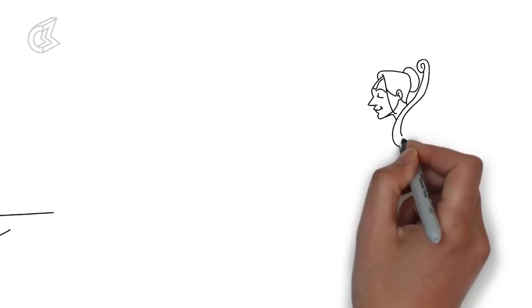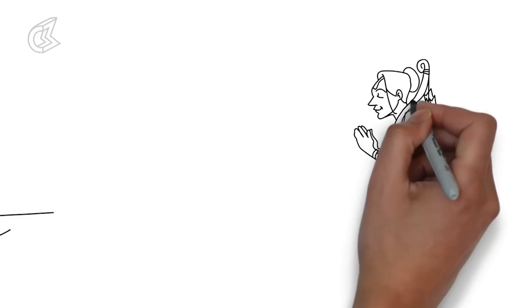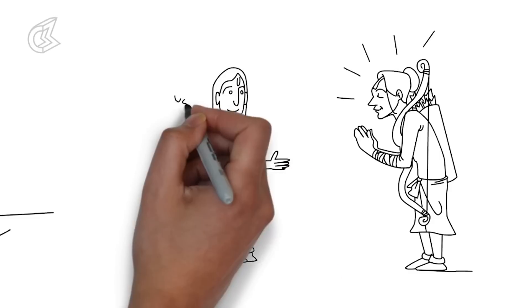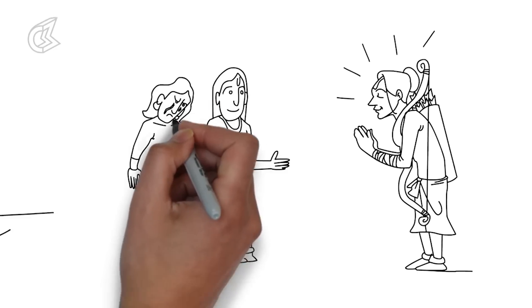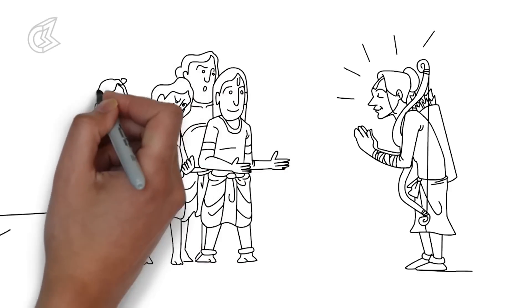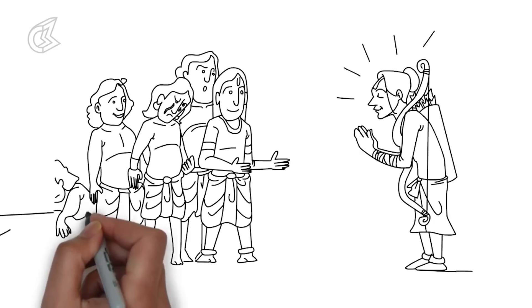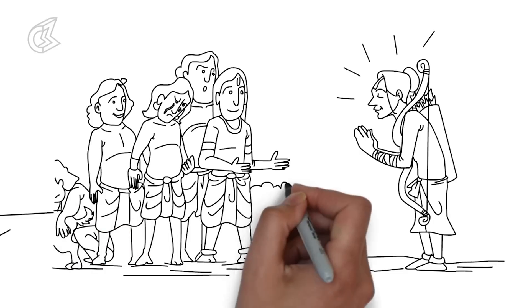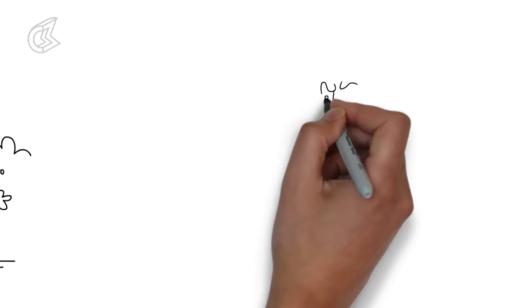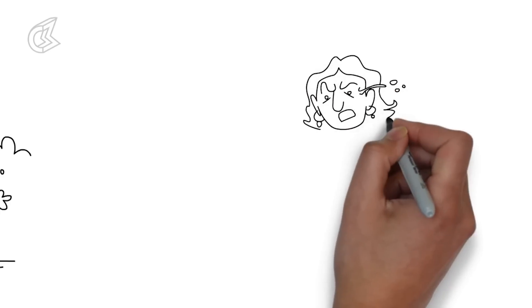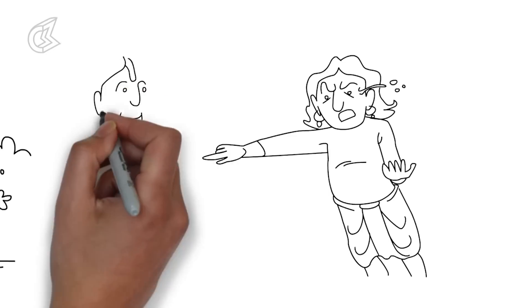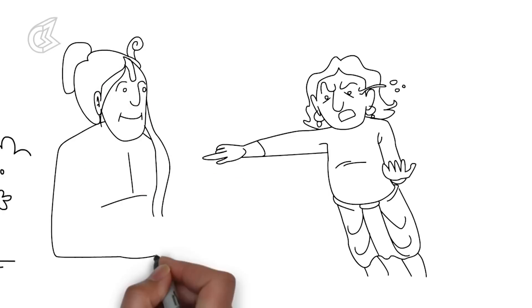When the Pandavas sought out the archer who had displayed such great skill, they found Eklavya, a Nishad boy. He was no warrior, but a mere hunter. He was the prince of no kingdom. He was not even a Kshatriya. When Eklavya found out that he was before the princes of Hastinapur, he kneeled and paid his respects. Before anyone could ask him anything, Arjun asked him a blunt question: Who was his guru and from where had he learned the art of archery? Eklavya answered with one word: Dron.